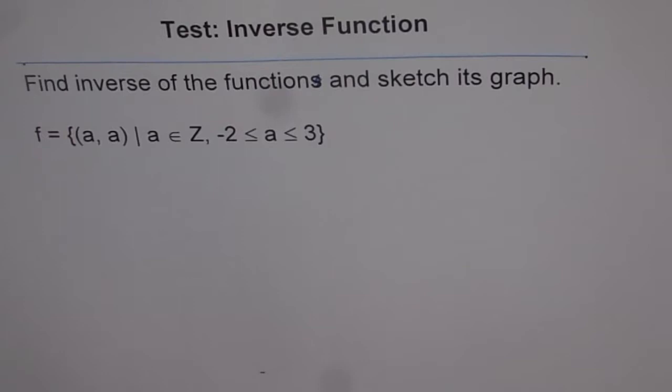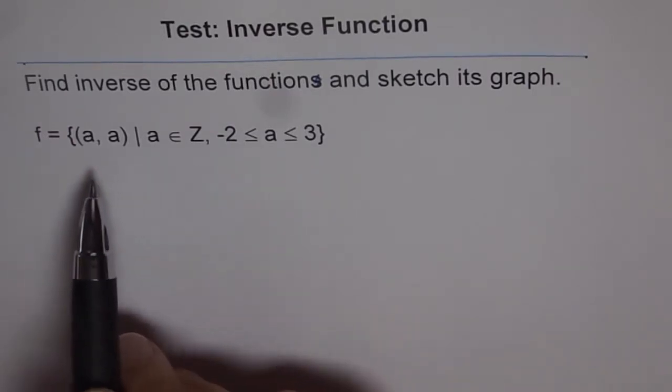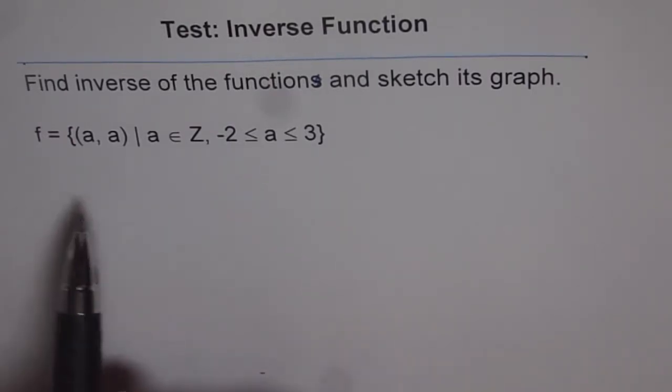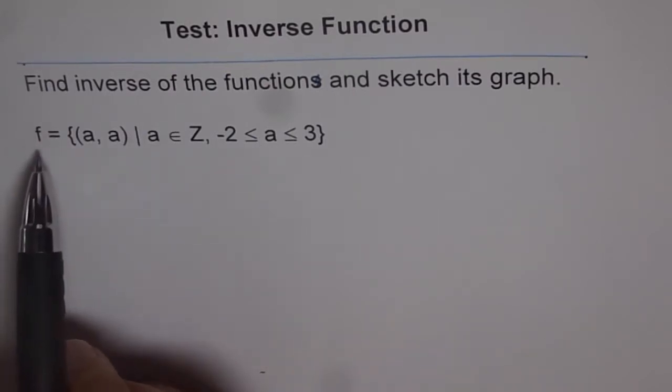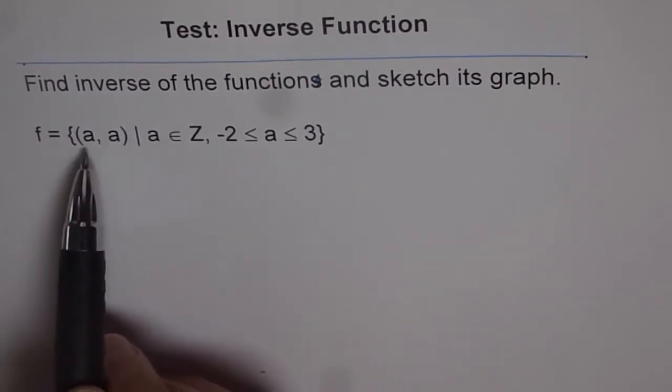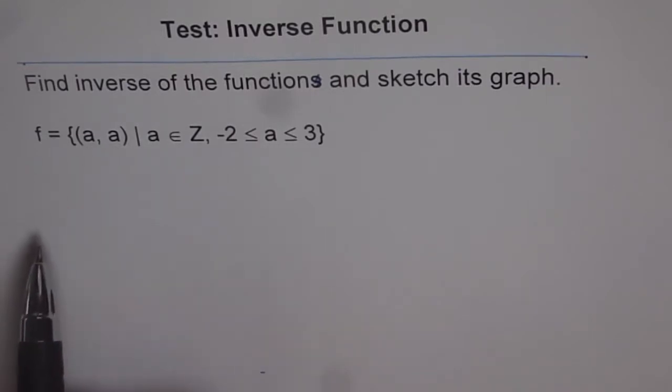At times students find it difficult to understand what is written here. Now when I read it, it makes it a bit clearer, right? So it is a function where we have a set of points (a, a) where